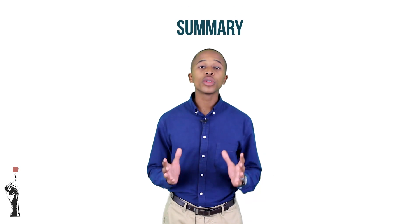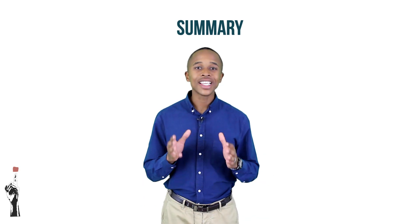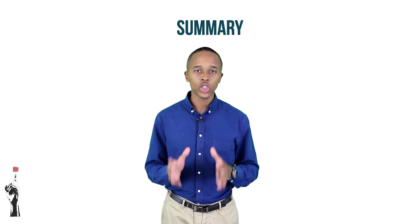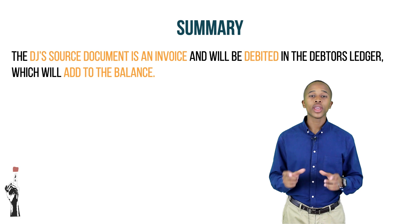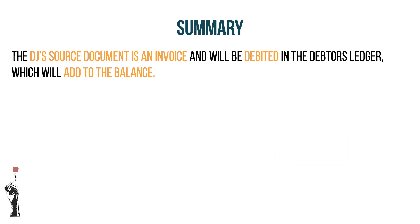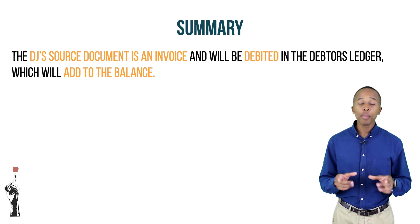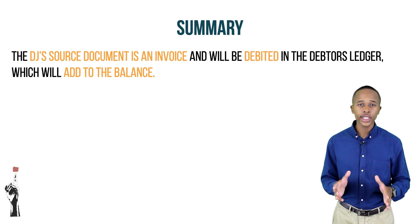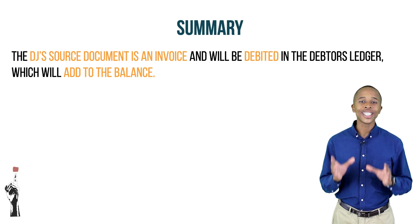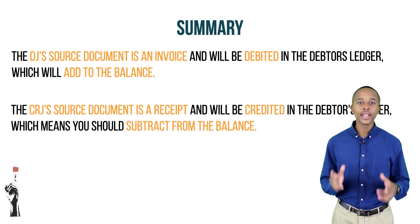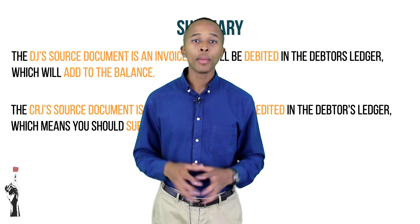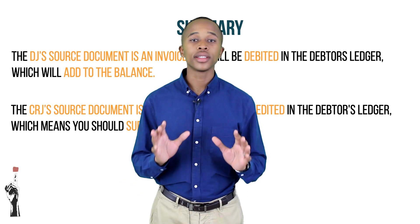Let's sum up what we've learned today. The DJ source document is an invoice, which will be debited on the debtor's ledger and added to the balance. The CRJ source document is a receipt, which will be credited on the debtor's ledger, meaning you subtract from the balance. Take 30 seconds to write this down.